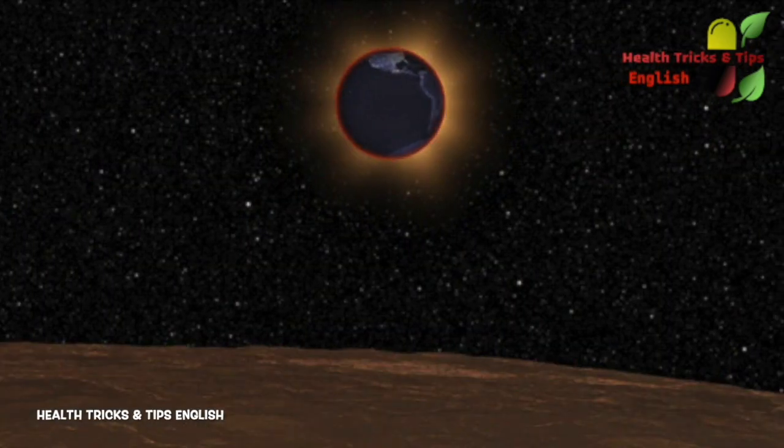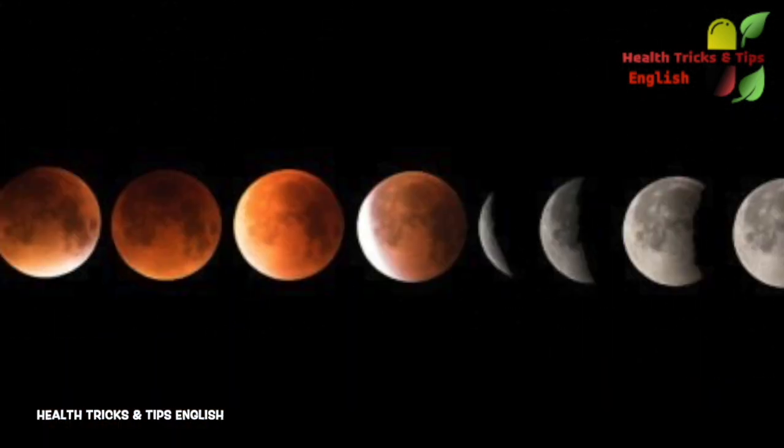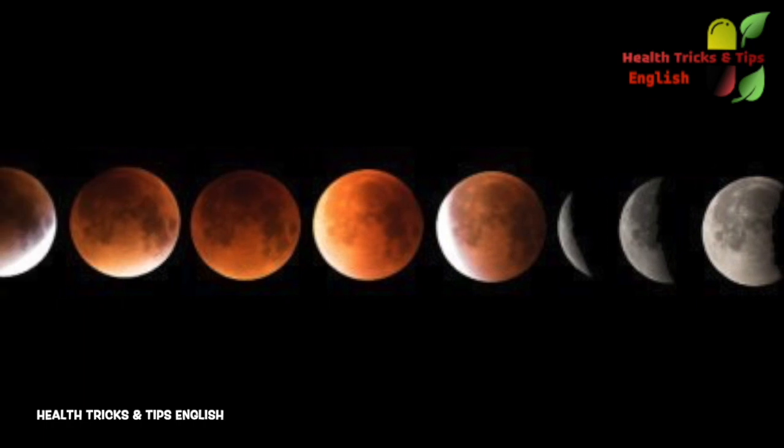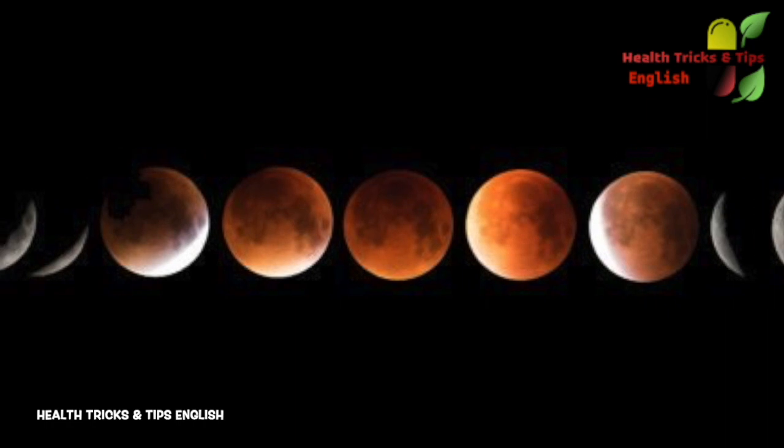Now let's see what are the beliefs in United States. There has been a superstition existing since long that Eclipse is a sign of Apocalypse. And as per some scholars, this belief has stemmed from the Bible.